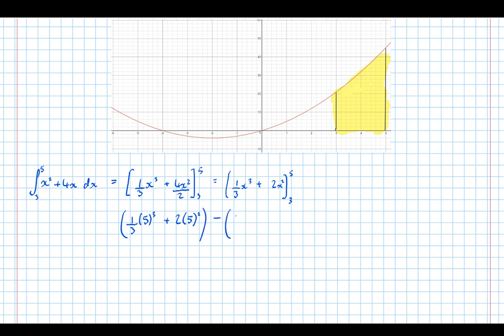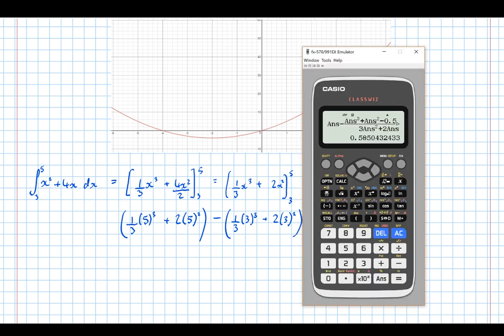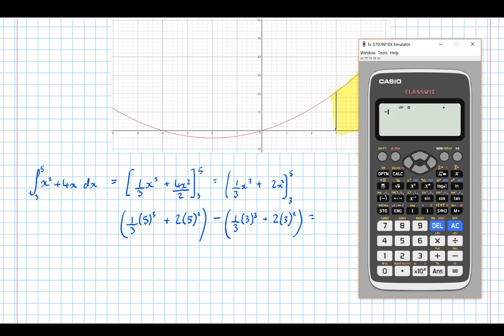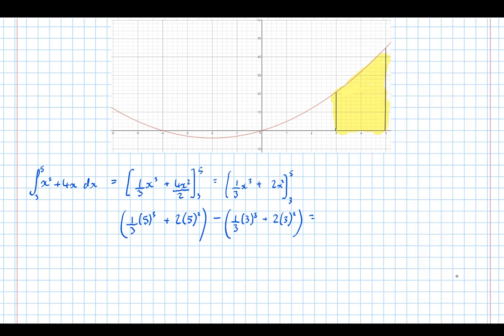So, a third of 5 cubed plus 2 lots of 5 squared, take a third 3 cubed plus 2 lots of 3 squared equals 275 over 3. Make that 3 a little bit more legible.